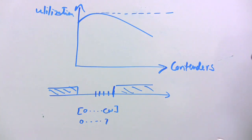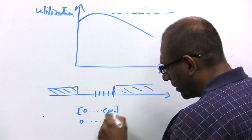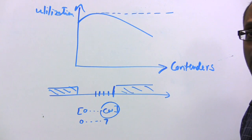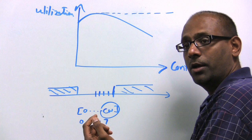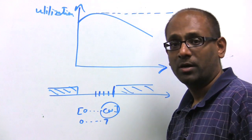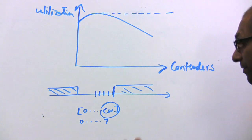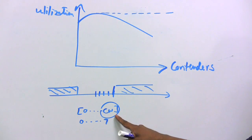Now the point is the following. Notice that this contention window number is highly a function of the number of contenders. If you have only one contender, you don't need to back off. You can basically pick 0. If you have, correspondingly, an infinite number of contenders, this value should be infinity.